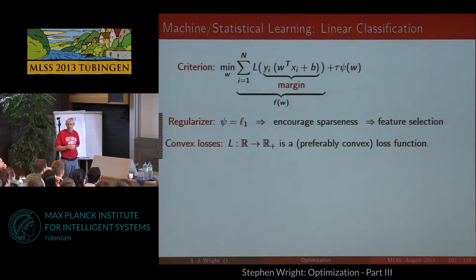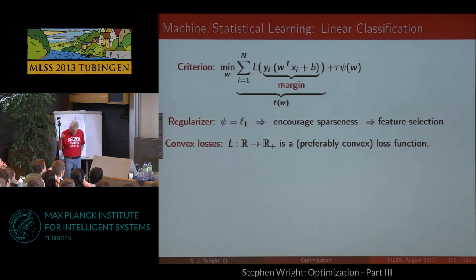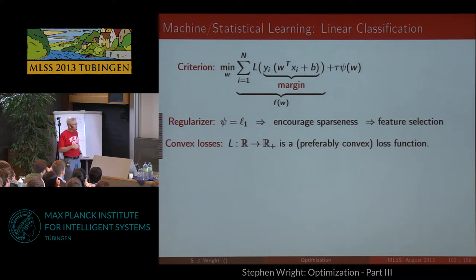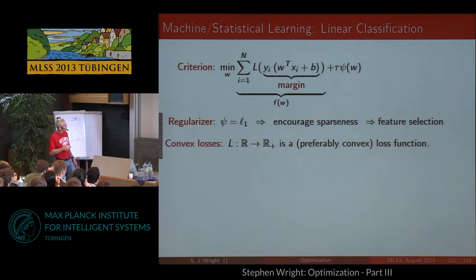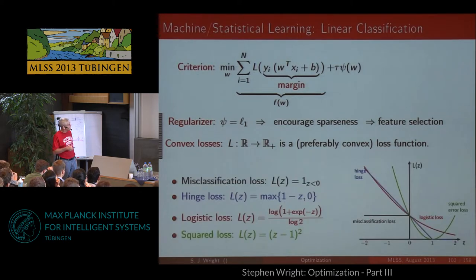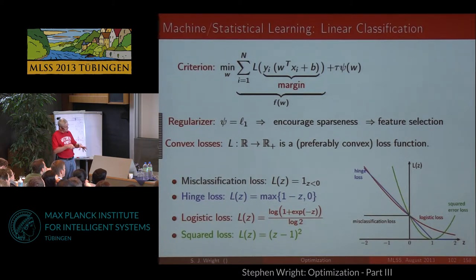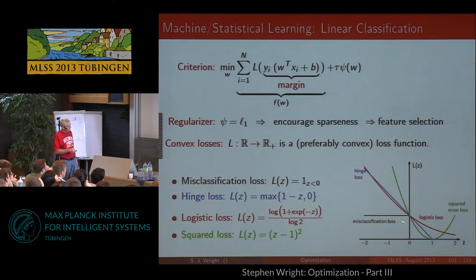This has the structure where f(w) is a sum of individual losses each depending on one data point — a perfect case for stochastic gradient. That's exactly why Bottou and LeCun and others applied stochastic gradient to learning problems. To replace the misclassification function, the hinge loss is one convex majorization — a piecewise linear convex function. You can also use logistic loss, squared loss, and various others. There are also different regularizers: none, the L2-squared norm, or the L1 norm.